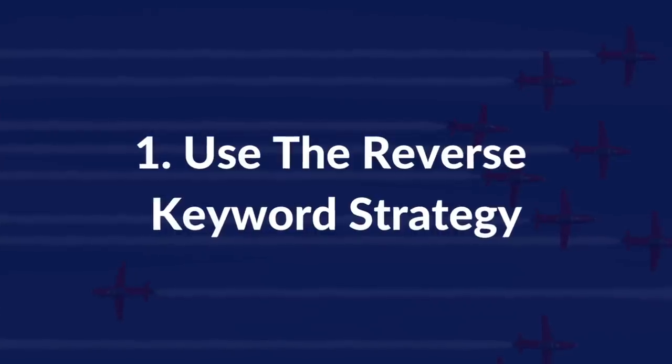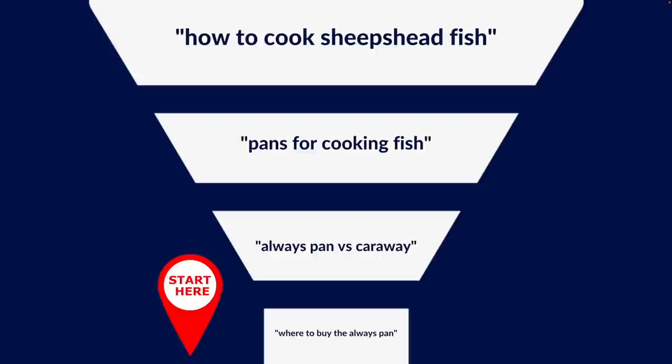The first best practice is to use the reverse keyword strategy. The reverse keyword strategy is actually quite simple, but it's really, really powerful. The reason is because most people, when they try to do keyword research and they're trying to grow their organic traffic, they tend to focus on informational keywords because those usually have the highest search volume.